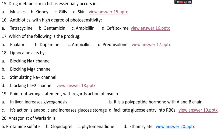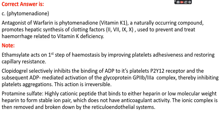Question number twenty: the antagonist of warfarin is — option A: protamine sulfate, option B: clopidogrel, option C: phytomenadione, or option D: ethamsylate. The right answer is option C, phytomenadione, which is vitamin K1. It is a naturally occurring compound that promotes hepatic synthesis of clotting factors II, VII, IX, and X, and is used to prevent and treat hemorrhage related to vitamin K deficiency.